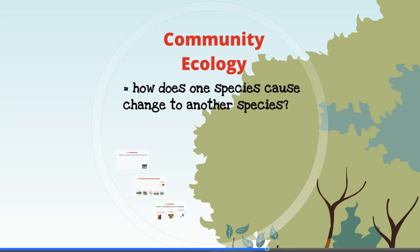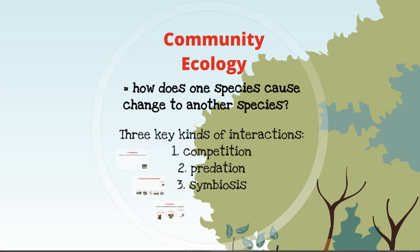Community ecologists study how communities interact. Remember, a community is all of the different species in a particular area. Community ecologists ask: how does one species cause another species to change? There are three main kinds of interactions found in communities: competition, predation, and symbiosis.